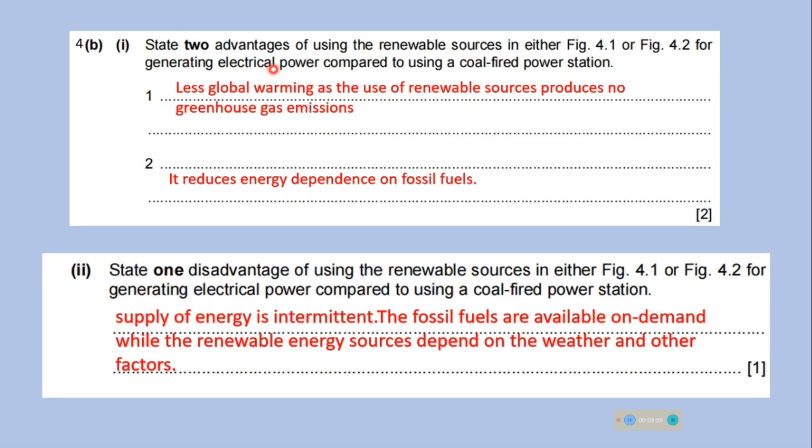State two advantages of using the renewable source in either in figure 4.1 or in the second part 4.2 for generating electrical power compared to using a coal fired power station. So, less global warming as the use of renewable sources produces no greenhouse gas emissions. And second advantage is it reduces energy dependence on fossil fuels.